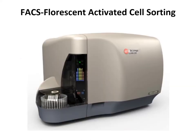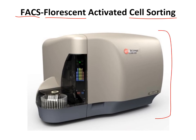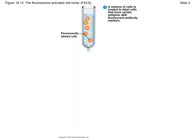A much more common application for fluorescent antibodies is in FACS, which stands for fluorescent activated cell sorting. The fluorescent refers to the use of fluorescent antibodies, and the main purpose of FACS is cell sorting — to take a suspension of many different cells and separate them out by type. This is an example of a FACS machine, also called a cell sorter, which does this process very efficiently using computerized control.